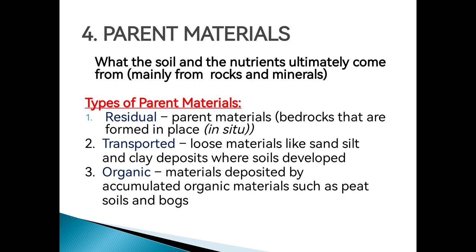There are three kinds of parent materials. We have residual — parent materials that are formed in place, mostly bedrocks. We also have transported parent materials, which are loose materials like sand, silt, and clay deposits where soils develop. And organic parent materials are materials deposited by accumulated organic materials such as peat soils and bogs. Later on, we are going to talk about these three types of parent materials.